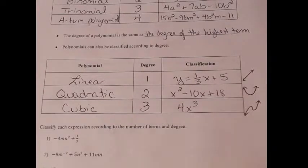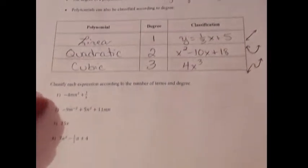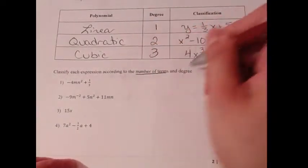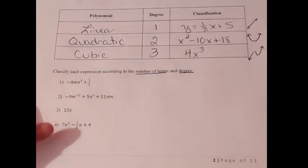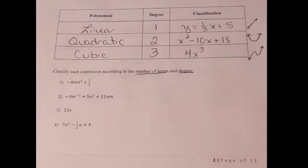Take a moment to classify each expression according to number of terms and degree. For each one, tell me: is it a monomial, binomial, trinomial, or four-term polynomial? And is it linear, quadratic, or cubic? The four expressions are: (1) negative 4mn squared plus one-third, (2) negative 9m to the negative 2 plus 5n squared plus 11mn, (3) 15x, and (4) 7a squared minus one-half a plus 4.